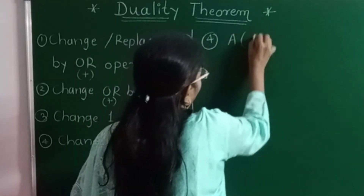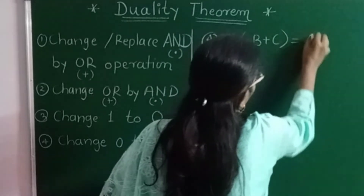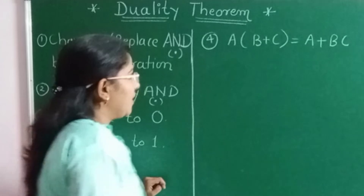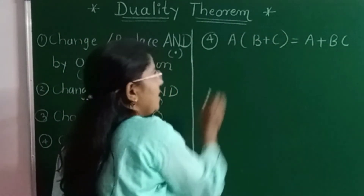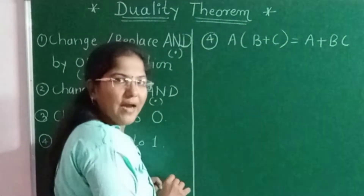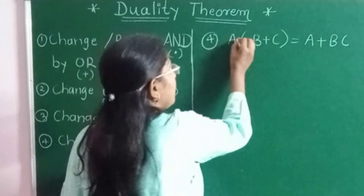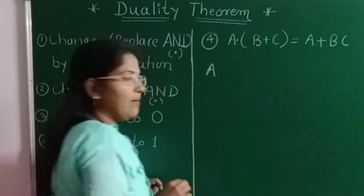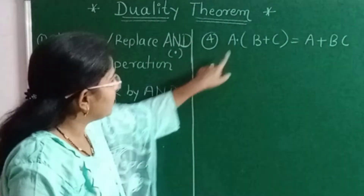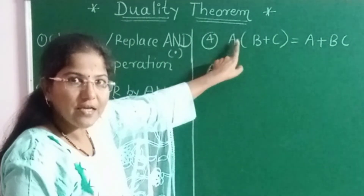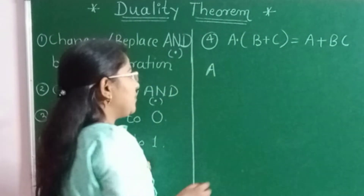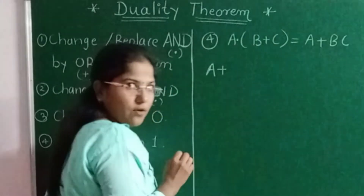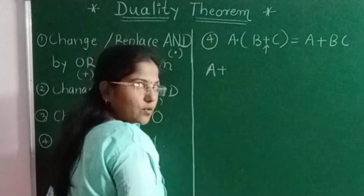Now consider another example: A · (B + C) = A + BC. I have to find its dual. In A · (B + C), there is nothing explicit between A and the bracket, so by default a dot (AND operation) is considered. To find its dual, I write the first input variable A as it is. After that I see which operator is there — it is the dot operator, so I change it to plus. In the bracket, B + C is there, and we replace that plus by dot.